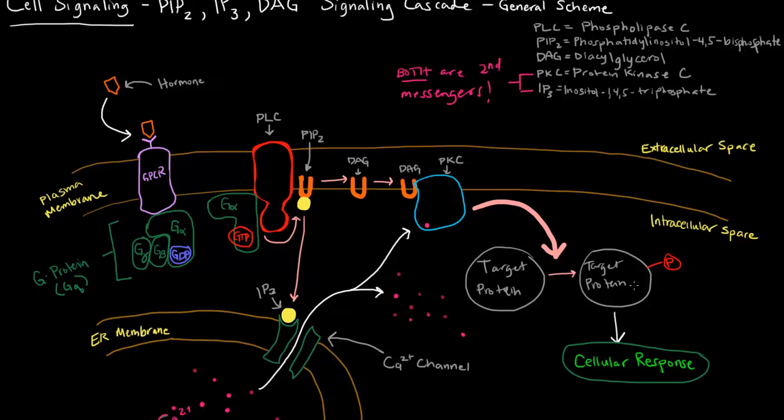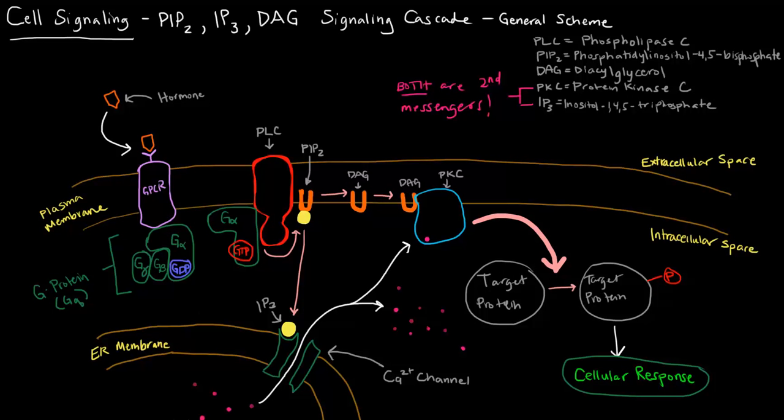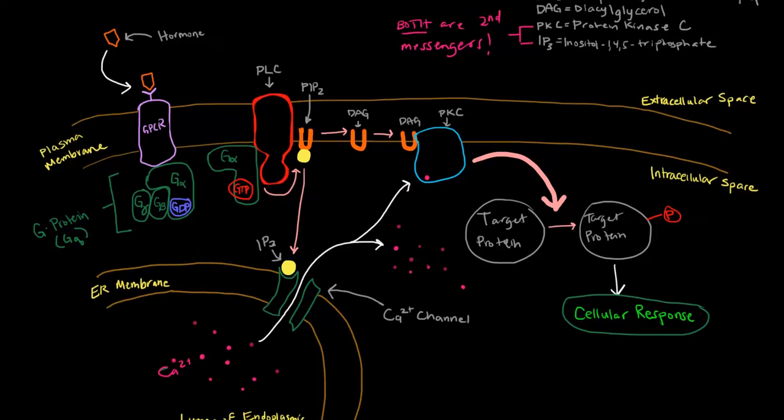Now this is of course the general scheme, so it's different for a variety of cases. This signaling cascade or pathway is in a bunch of different cells, so depending on the cell that's actually being bound and the hormone binding the receptor, there could be a variety of different things happening. So I hope that brief overview was helpful.